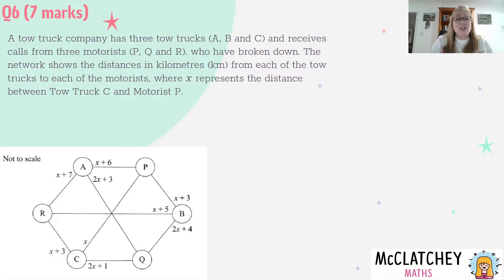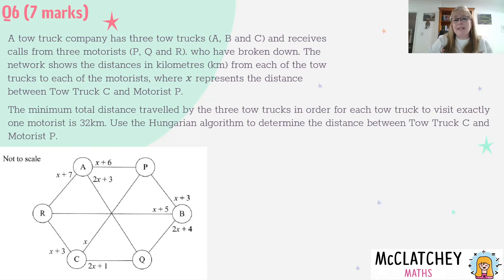Let's finish reading the question. The minimum total distance travelled by the three tow trucks in order for each tow truck to visit exactly one motorist is 32 kilometres. Use the Hungarian algorithm to determine the distance between tow truck C and motorist P.